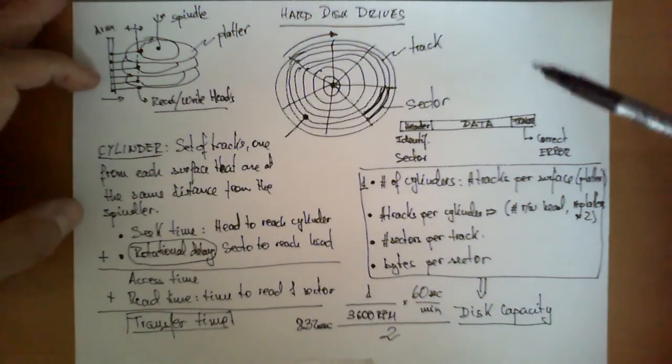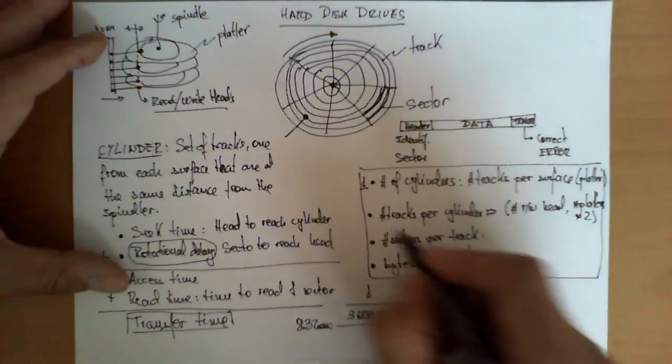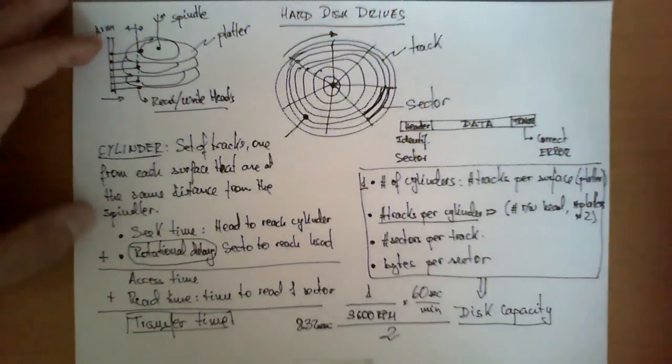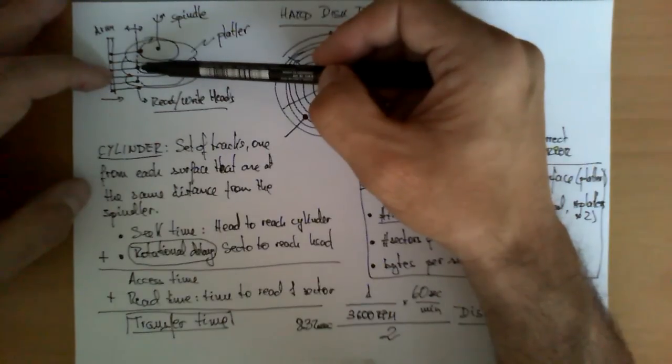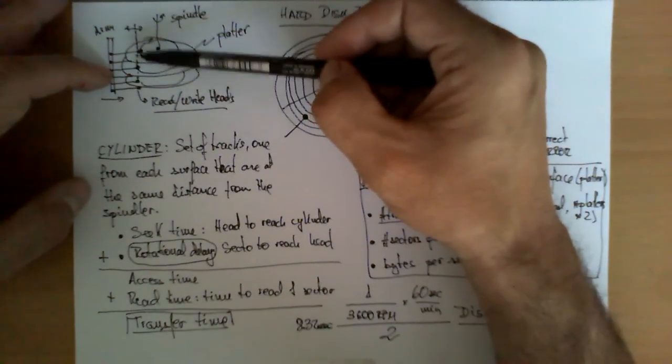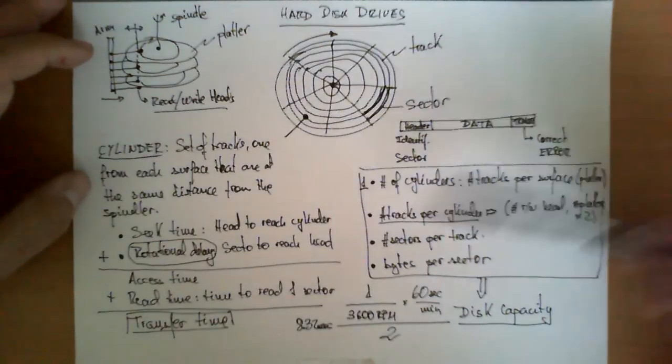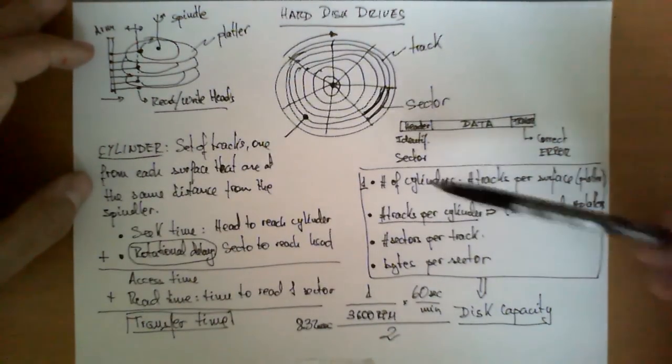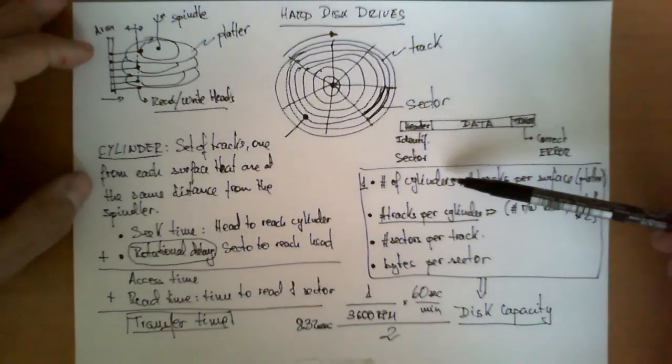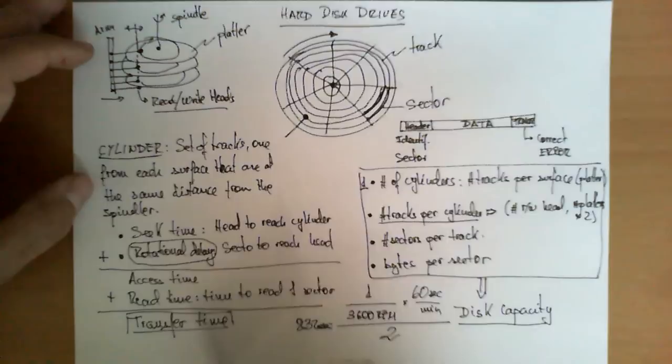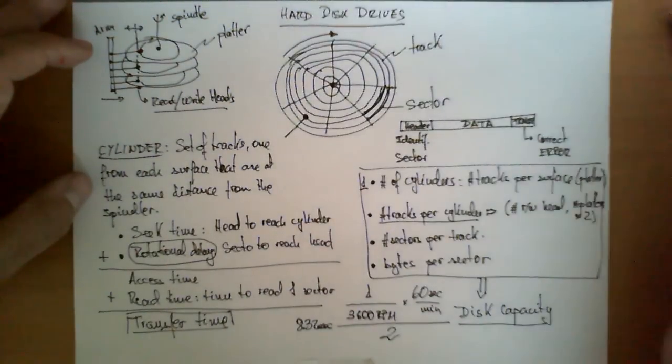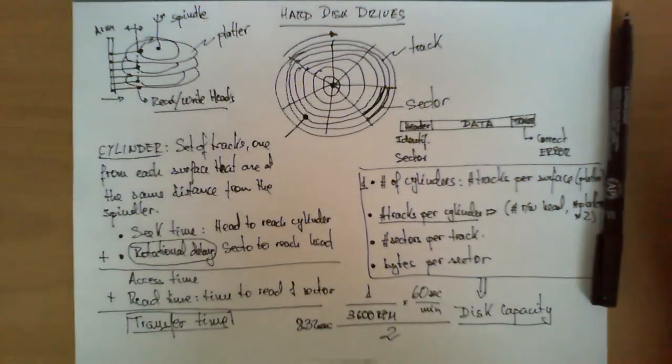We also should know that the time to locate the right track to be read within the cylinder requires no time, because choosing the right track in the cylinder is as simple as selecting one of these read-write heads, which will read the sector from the right surface of the platter, and therefore there is no delay involved on selecting the track. However, we do have delay on selecting the right cylinder and the right sector, and of course the read time to wait for the sector to pass underneath the head. And this is how hard drives work.